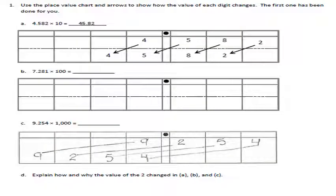Okay, this is Module question one. It says to use a place value chart and arrows to show how the value of each digit changes — the first one has been done for you. Let's talk about it. This one says four and five hundred eighty-two thousandths times ten. In the place value chart, as shown in class, you have the decimal point.